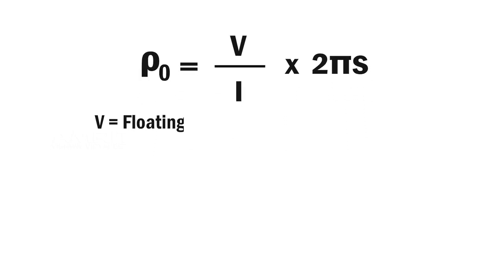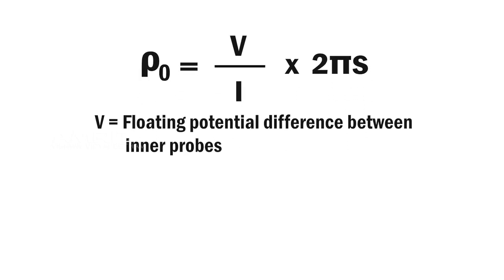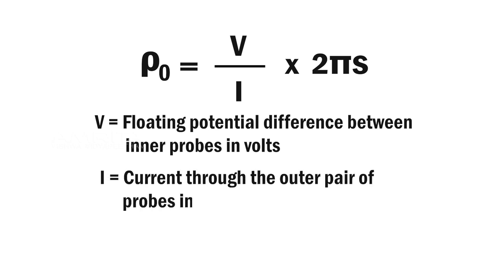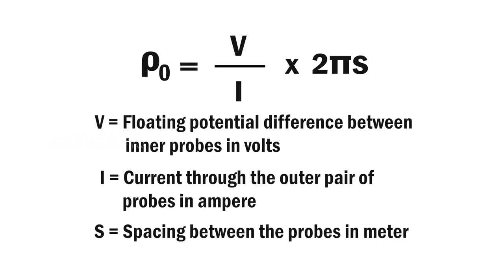Where V is the floating potential difference between inner probes in volts, I is the current through the outer pair of probes in ampere, and s is the spacing between the probes in meter.